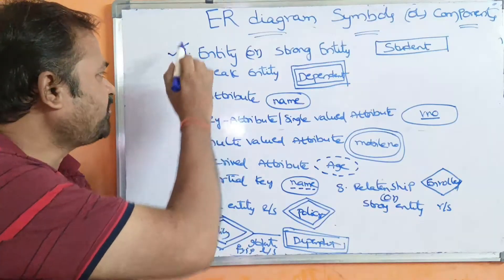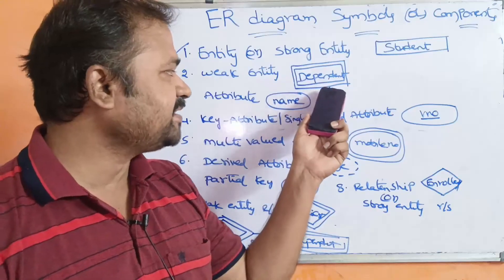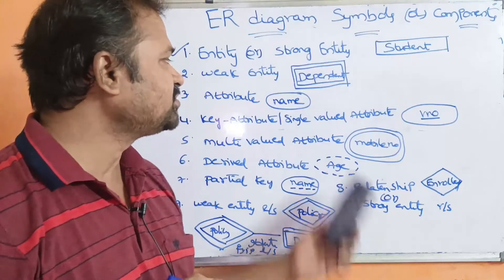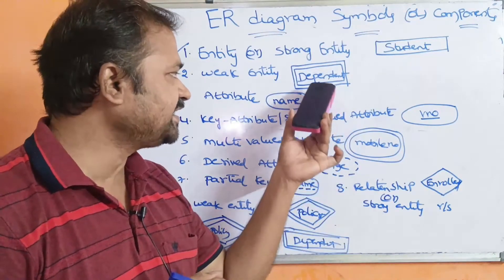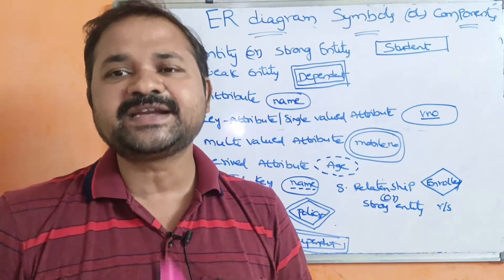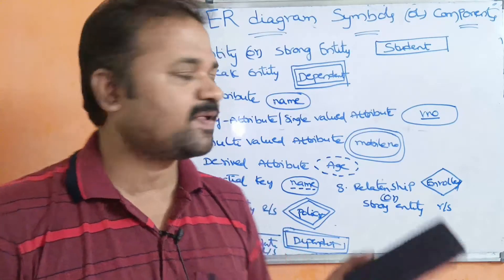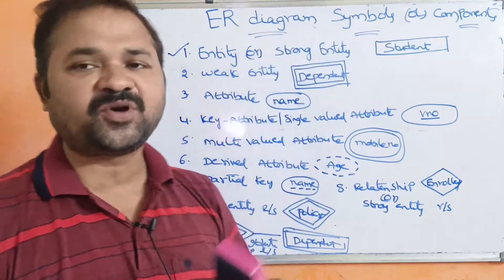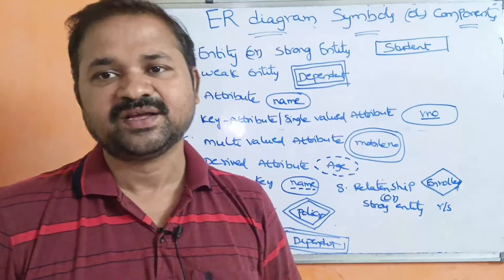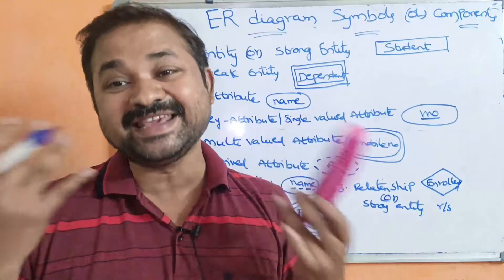The second type of entity is a weak entity. Weak entity is represented by a double rectangle symbol. Within the double rectangle, we specify the name of the weak entity — for example, 'dependent'. Weak entity means it doesn't use a primary key. Weak entity always depends upon the strong entity, which can also be called the owner entity.